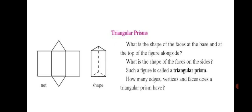And how many faces does a triangular prism have? One face on top, 1 face at the bottom and 3 faces at the sides. So altogether 3 plus 2, 5 faces a triangular prism has altogether. This way we have studied the triangular prism.